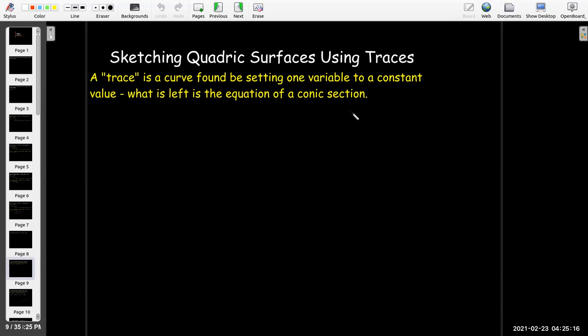It'll be a conic section. So remember conic sections are either circles, ellipses, parabolas, or hyperbolas. Or you could actually have a line as kind of a degenerate conic section.